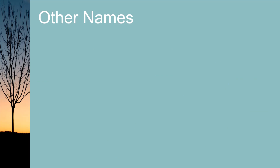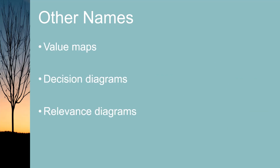Influence diagrams are known by other names, including value maps, decision diagrams, relevance diagrams, and decision networks. I chose the term influence diagram for this course because when I googled these terms, influence diagram was used much more often than the others — the crowd has spoken and I have followed.